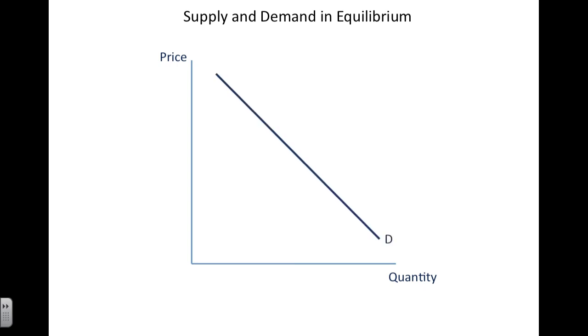We have a downward sloping demand curve and an upward sloping supply curve. These two curves intersect at what we call equilibrium. That is price equilibrium and quantity equilibrium.